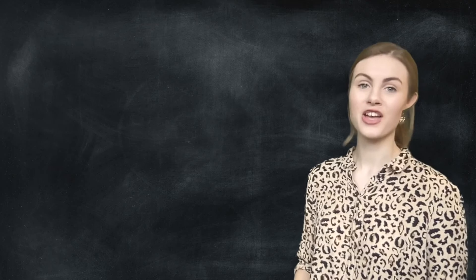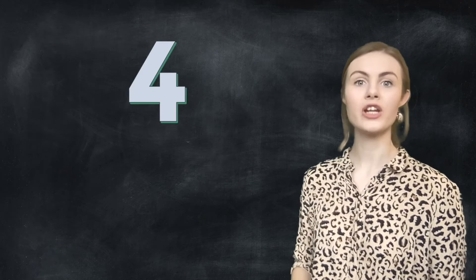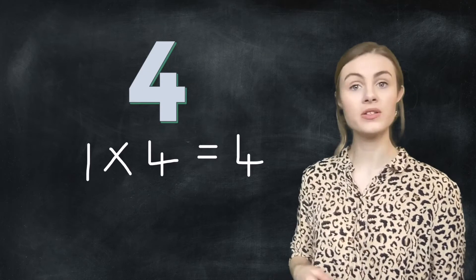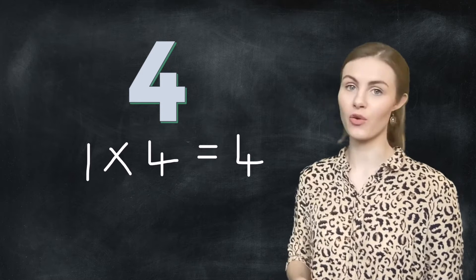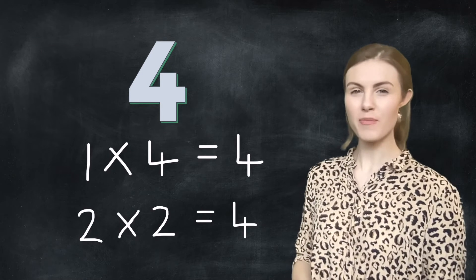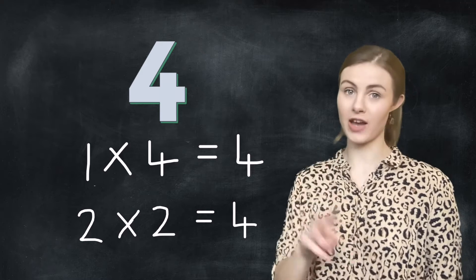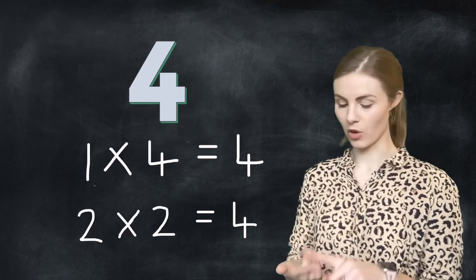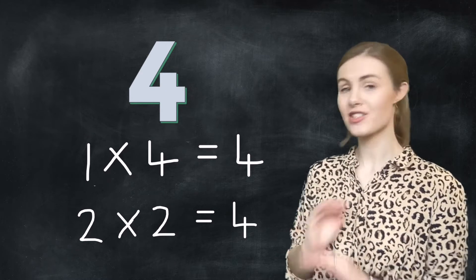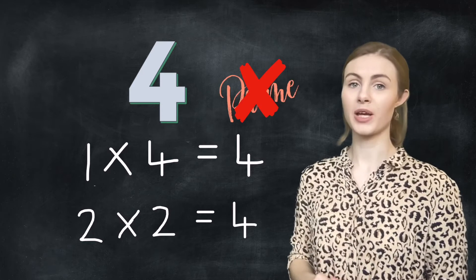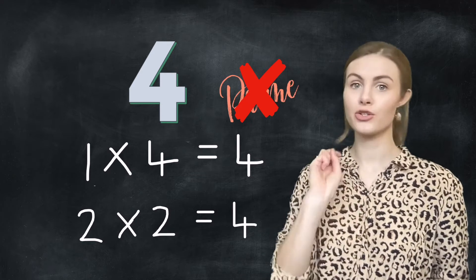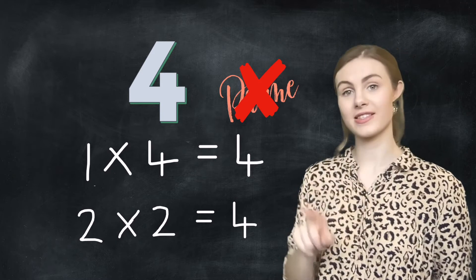Let's have a look at another example: four. We're going to factor four. I know that one times four is four, and two times two is four. So the number four actually has three factors: one, two, and four. This means it's not a prime number, because a prime number only has two factors — one and itself.